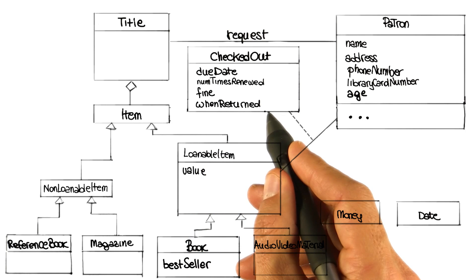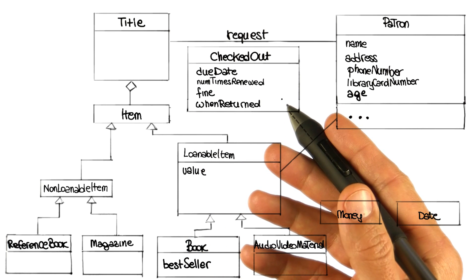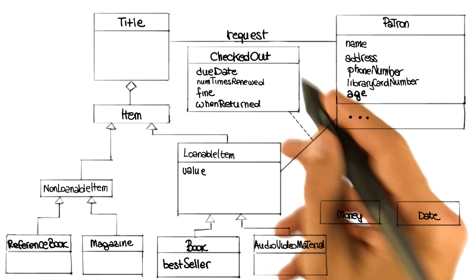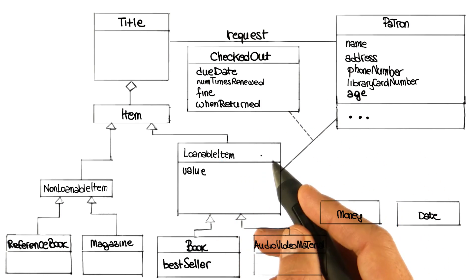And how much those fines are, and how do you compute how much it is? It's how many days it was from the time it was due to when they returned it. So what we can do is put an additional attribute in the checked out class, and I'm going to call it when returned. That attribute will have either a special value or it will contain the date on which the book was returned. In this way, you should be able to keep this in the system until it's paid and also compute how much the fine is. The special value is for the normal situation when they haven't returned it yet — that will tell us the loan is still active.